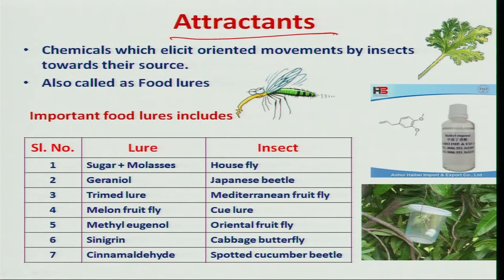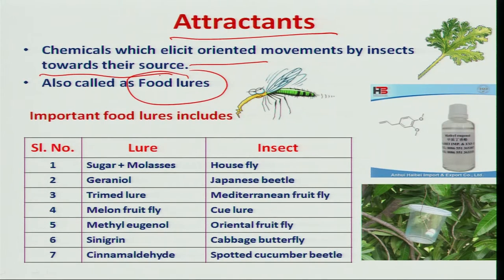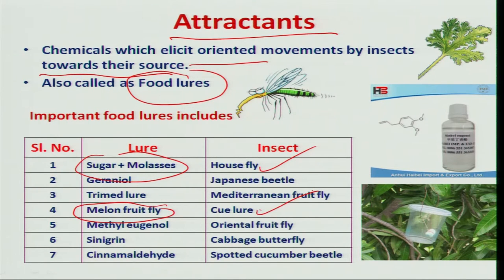An attractant is a chemical which brings oriented movement in insects towards the source of food. They are also called food lures. Various attractants are commercially available for different insect pests. For housefly management, sugar and molasses are used. For melon fruit fly management, cue-lure is used. For the oriental fruit fly, methyl eugenol is used, and it is widely applied in fruit fly management.